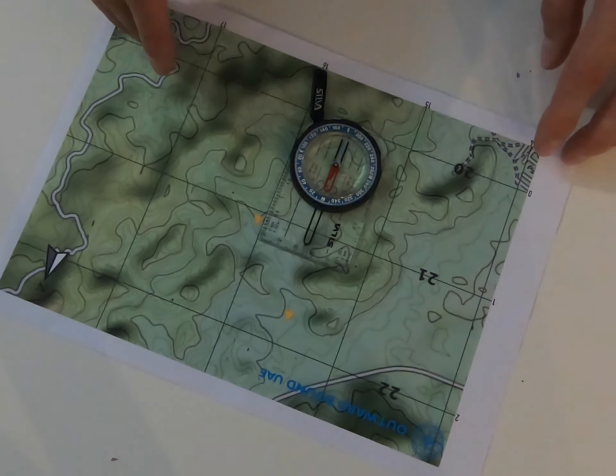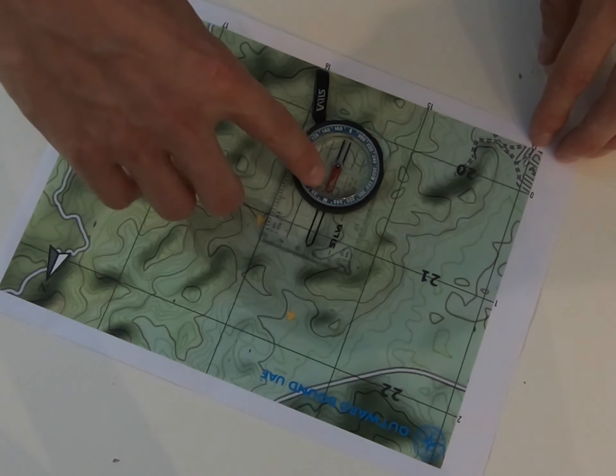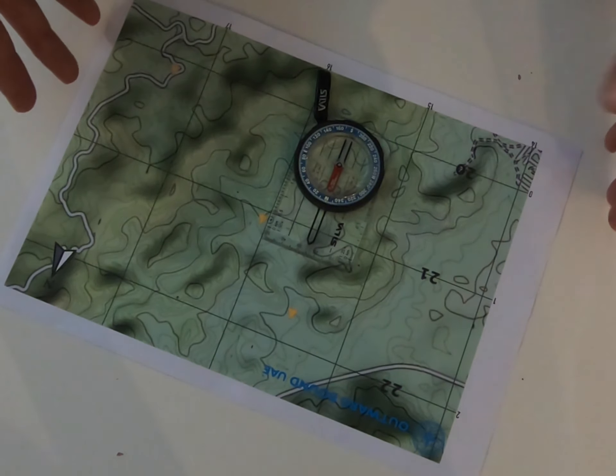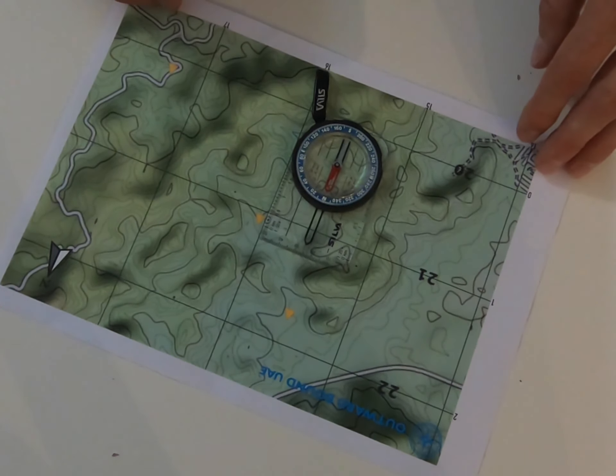And then everything lines up. Now the top of the map, which represents north, is pointing north, because it's in the same direction as our north needle. And that means everything in the 3D world is now matched up with our 2D map and everything is in the right place.